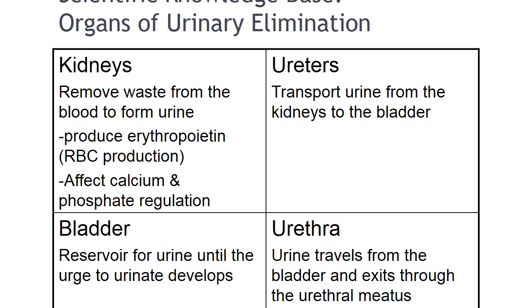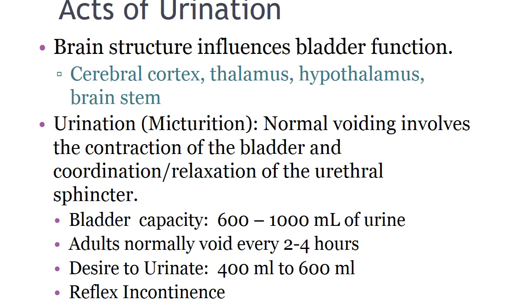All organs of the urinary system must be intact and functional for successful removal of urinary waste. Intact efferent (motor, outgoing, ventral) and afferent (sensory, incoming, dorsal) nerves from the bladder to the spinal cord and brain must be present. Normal voiding involves the contraction of the bladder and coordinated relaxation of the urethral sphincter and pelvic floor muscles.